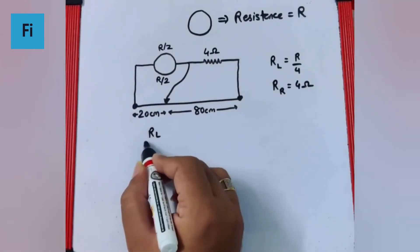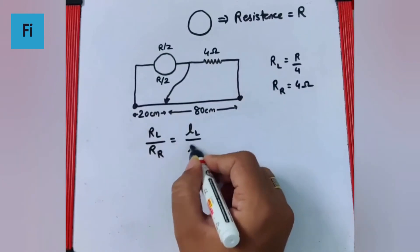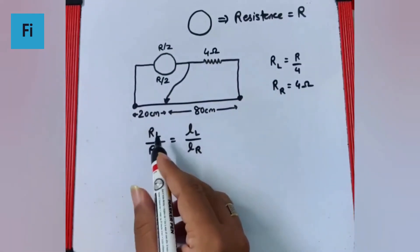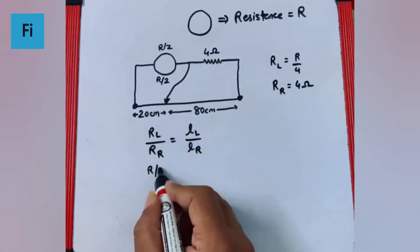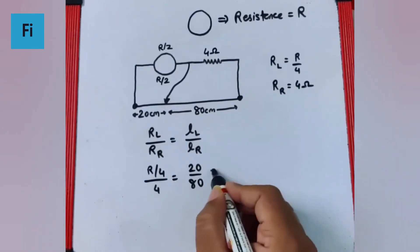So now we know that RL upon RR is the length on the left side upon the length on the right side. That means it is going to be R by 4 upon 4 equals 20 by 80 which is 1 by 4.